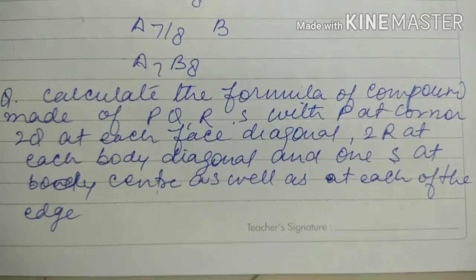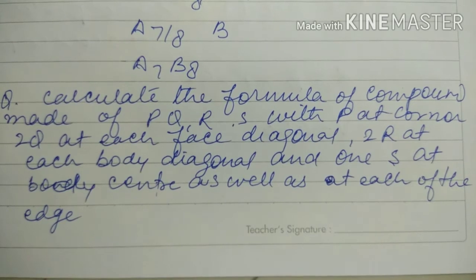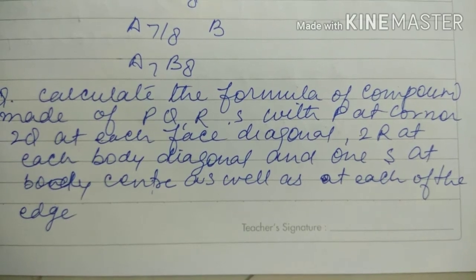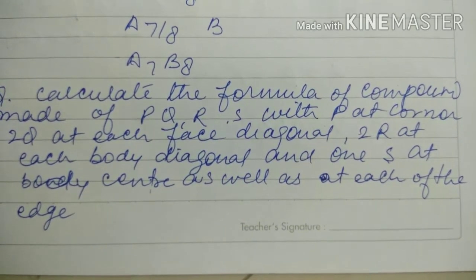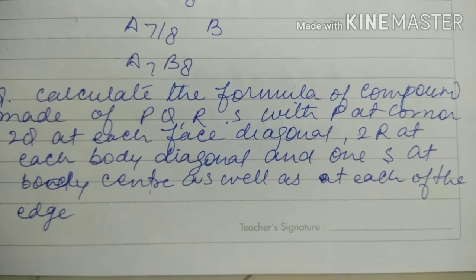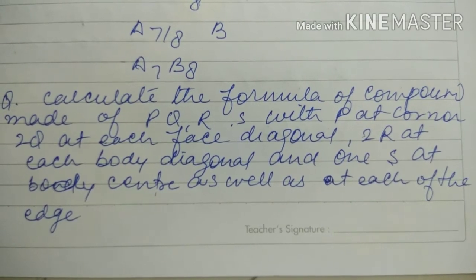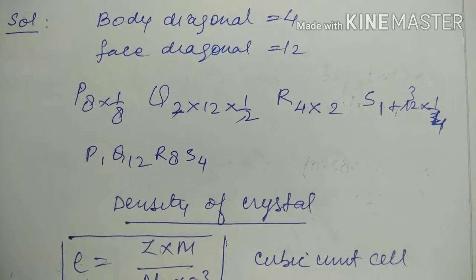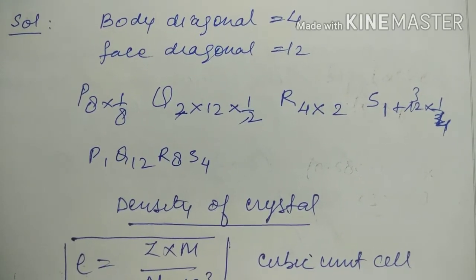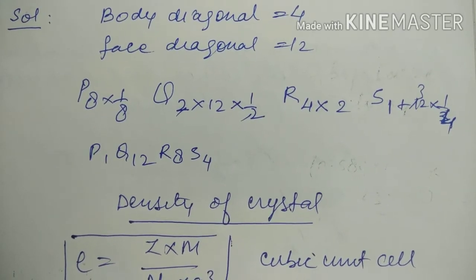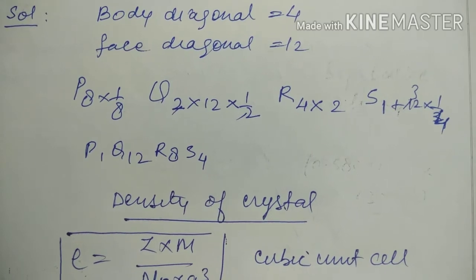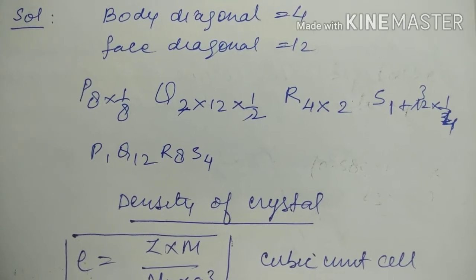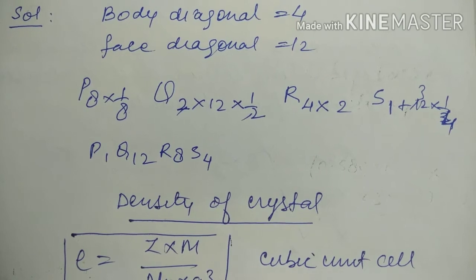Coming to the next question, this is an important one. Calculate the formula of compound made of P, Q, R, S. P at the corner of the cube, 2Q at the face diagonal, 2R at each body diagonal, 1S at body center as well as at each of the edge. So for the solution, you always remember that body diagonal is always 4 and face diagonal is always 12. P is FCC, means 8 times 1/8. Q is always in a face diagonal, means all the 12 face diagonals have 2 atoms, so 12 times 2, which is 24.